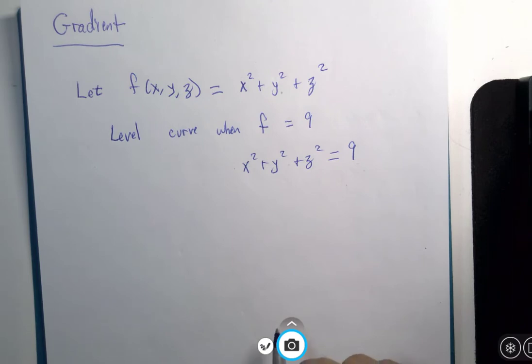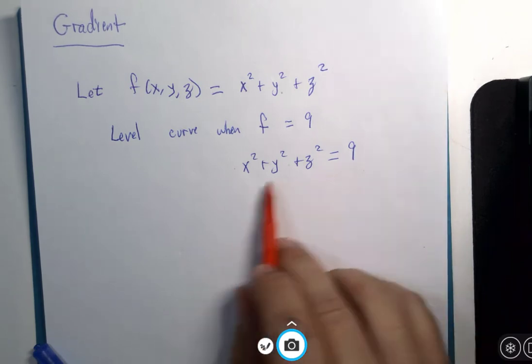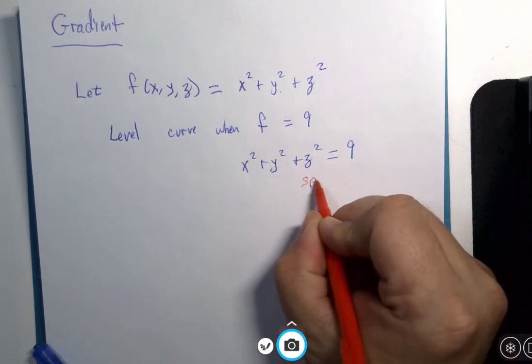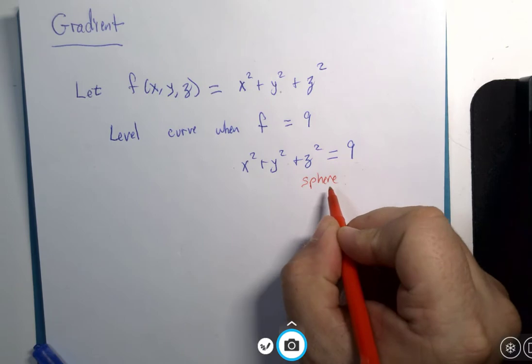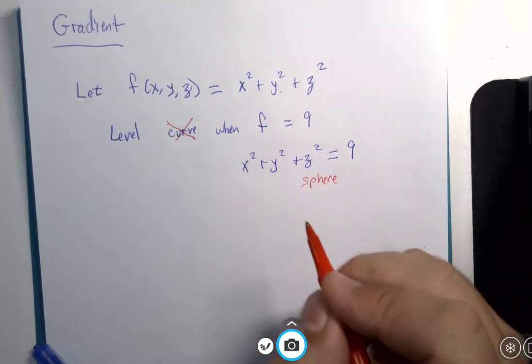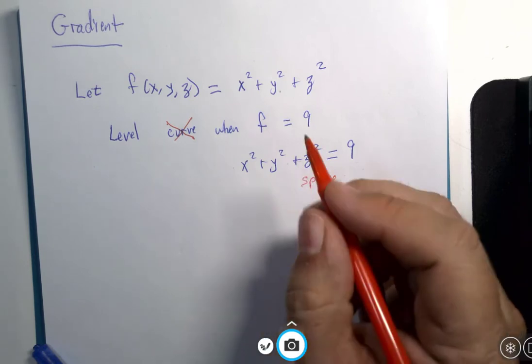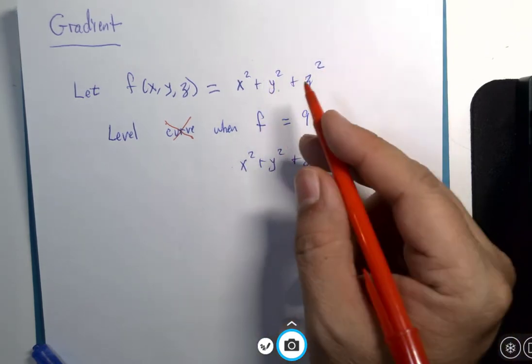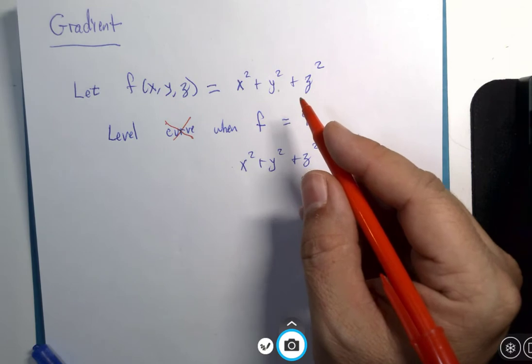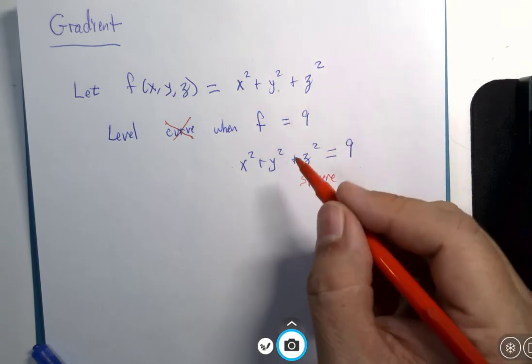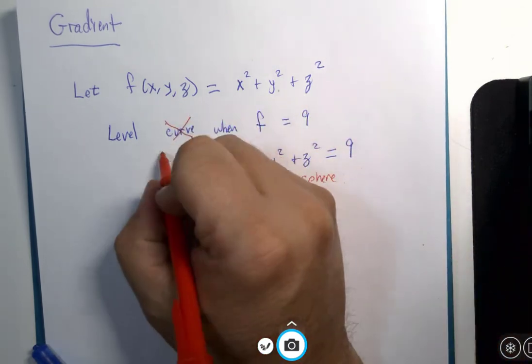Whoa. Hold on a second here. That is a sphere. That is no curve. Curves with variables like this would only have two variables. The three variable x, y, z case is going to be a surface.